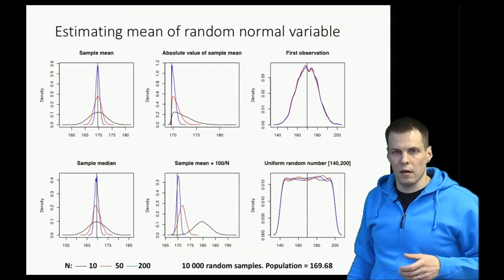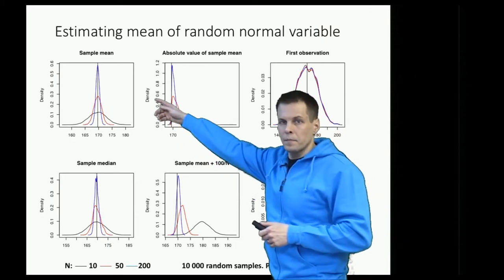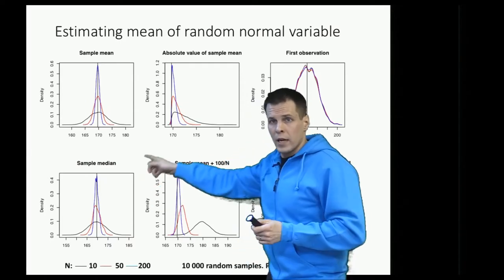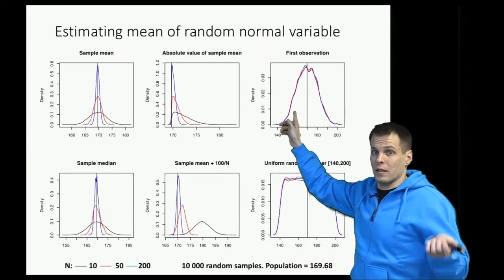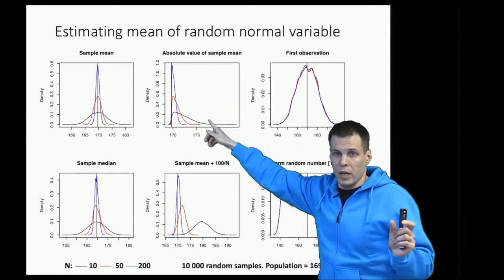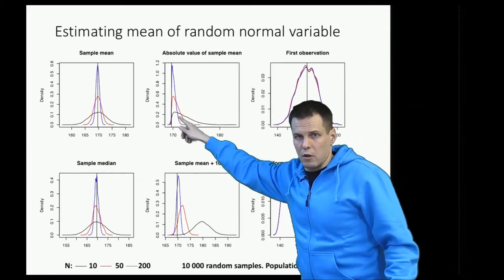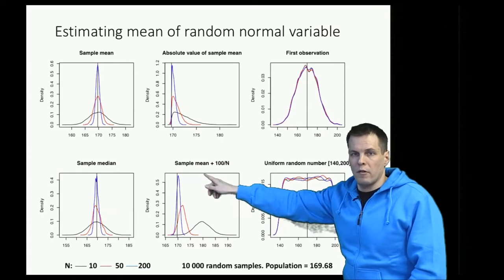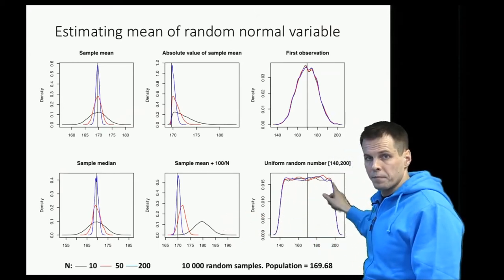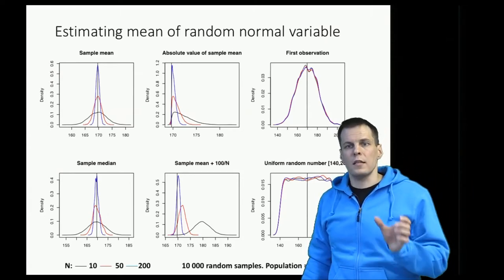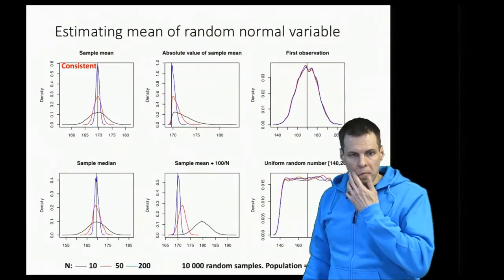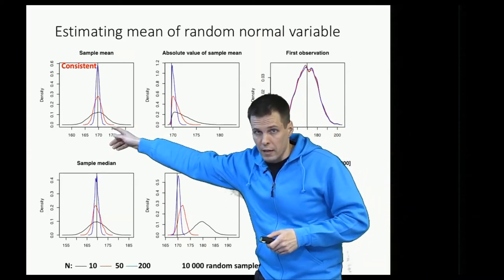Let's look at an example. We have the height example with six estimation strategies: sample mean, sample median, height of the first observation, absolute value of sample mean around the population value, sample mean plus 100 divided by sample size, and a random guess between 140 and 200. For consistency — do estimates improve as sample size increases? The sample mean is consistent: estimates get closer to the population value as sample size increases. The absolute value strategy is consistent but systematically too large. The first observation is inconsistent because sample size has no effect on it.